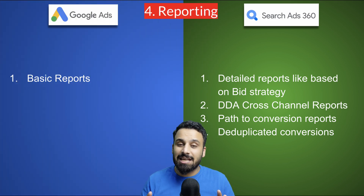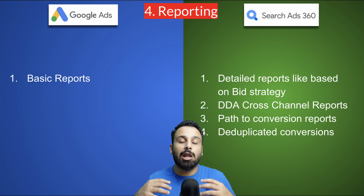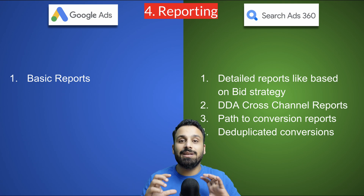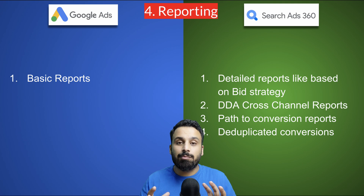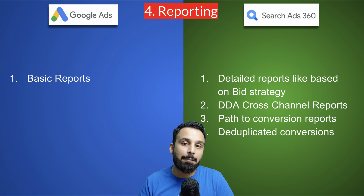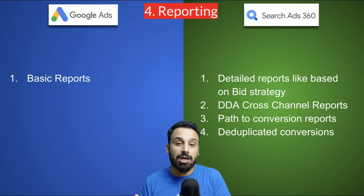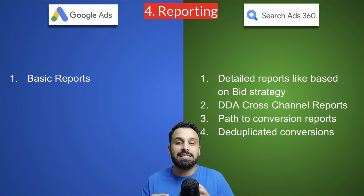Search Ads 360 also offers much more detailed reports than Google Ads. For example, you can run a report based on the bid strategies used across different ad groups or campaigns, generate data-driven attribution reports across multiple channels including display and social media on Facebook and Twitter, and create path-to-conversion reports that show a detailed path for each conversion.